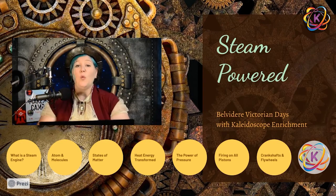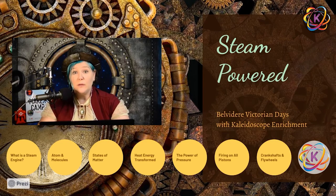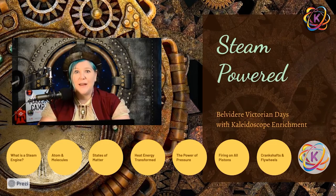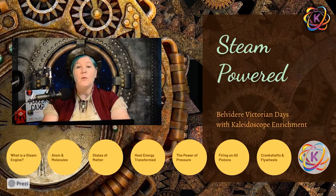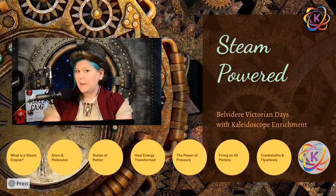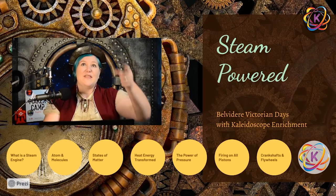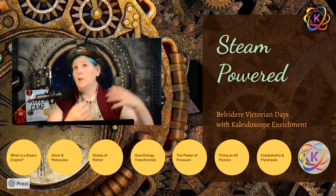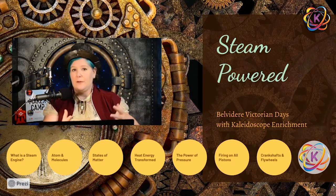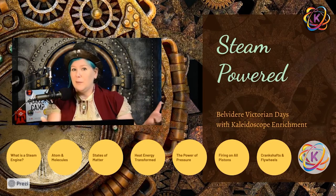Here's the thing. We still use that technology today and you know what we use it for? Making electricity. Can you believe that? We're still using Victorian tech to make our electricity. Here's what happens. Basically, we use the steam. So we burn coal or we burn gas or whatever, and we make steam like we're still making steam.